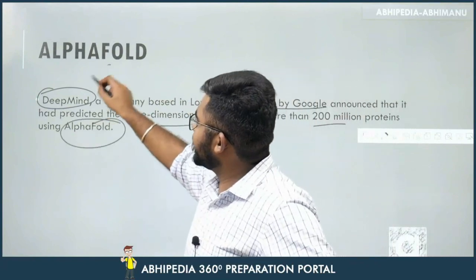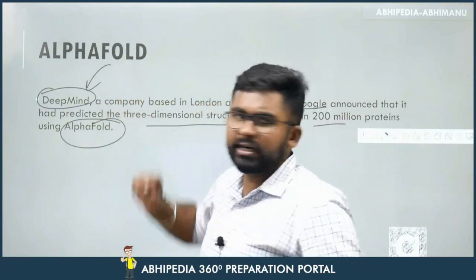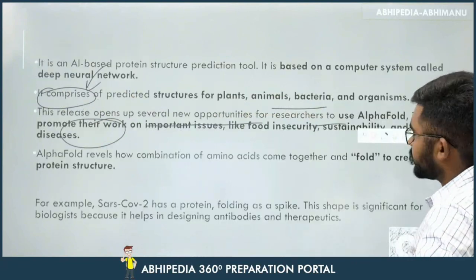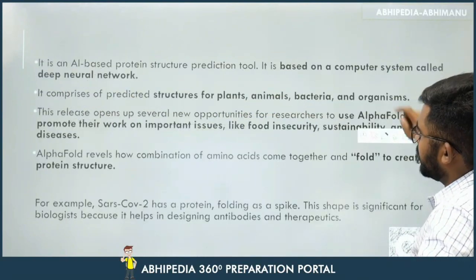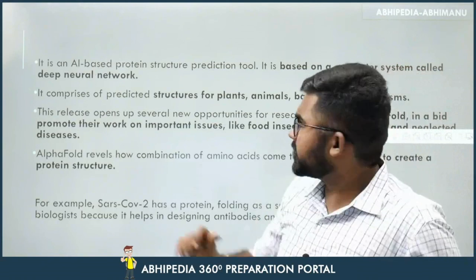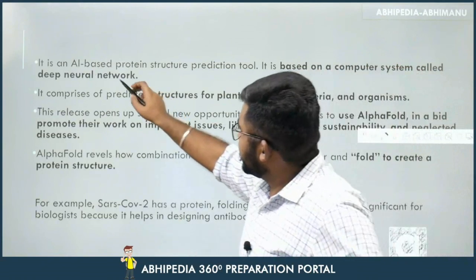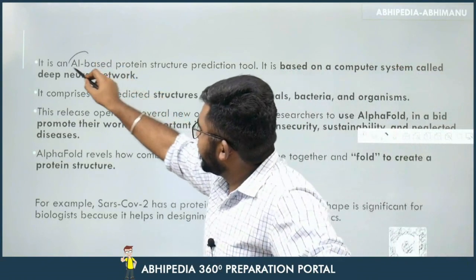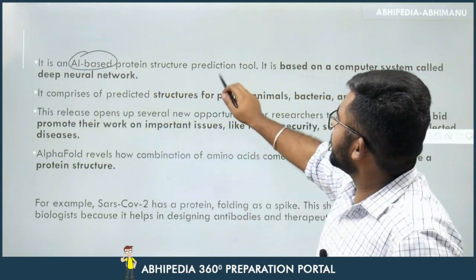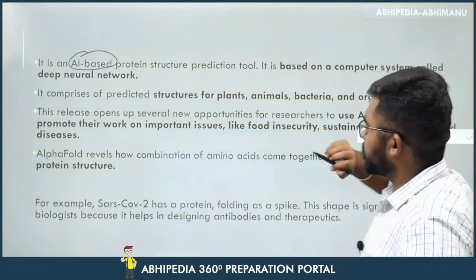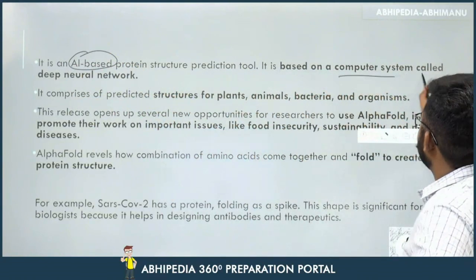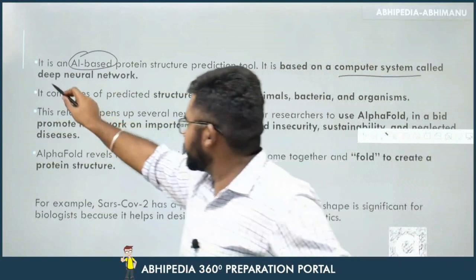AlphaFold is an application owned by DeepMind. What is AlphaFold? It is an AI-based protein structure prediction tool. It is based on a computer system called a Deep Neural Network.